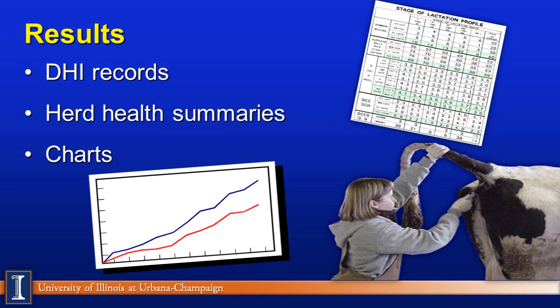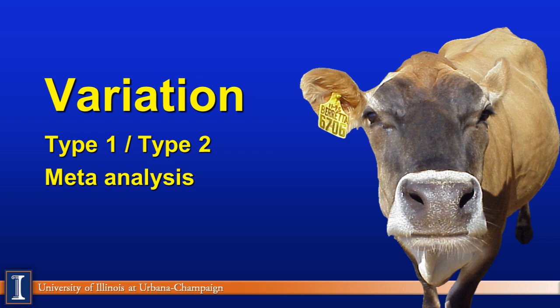A lot of you picked the fourth R, which is results, and I concur. Any feed additive has to have all four R's. If you're going to put in yeast culture, what will you look at? DHI records, health records, reading charts, something in PCDART or Dairy Comp 300 — something you can actually use to prove what's working. It doesn't work unless it works on your farm.